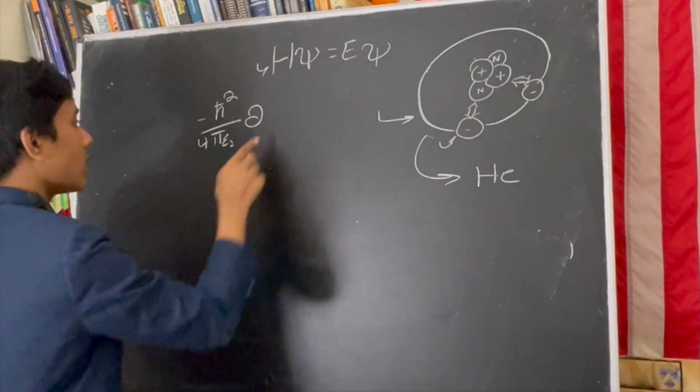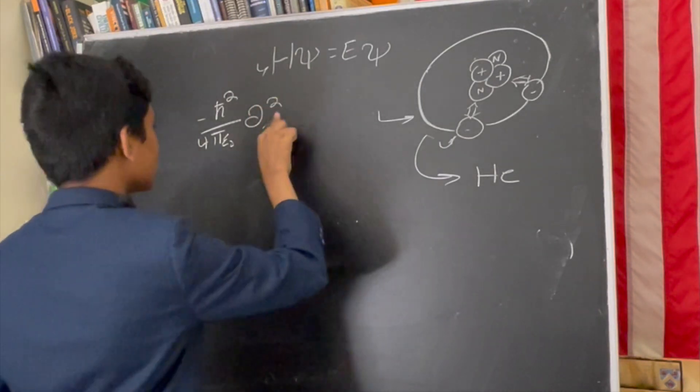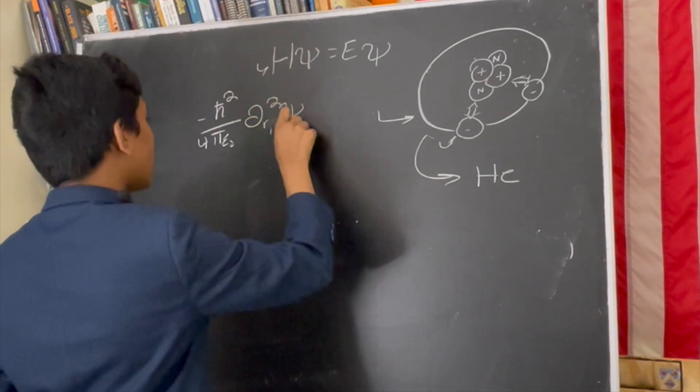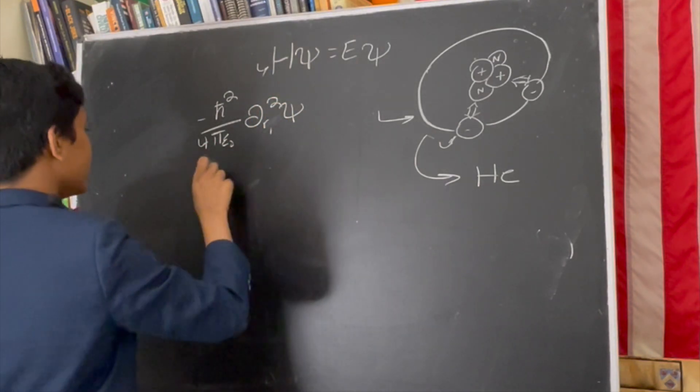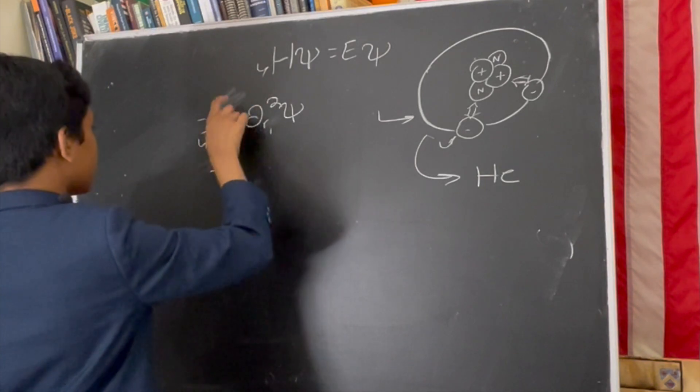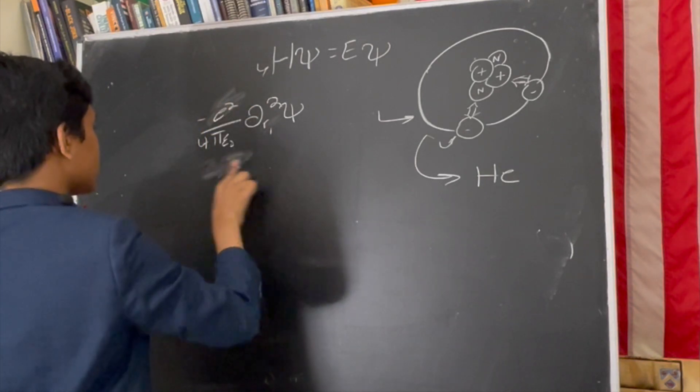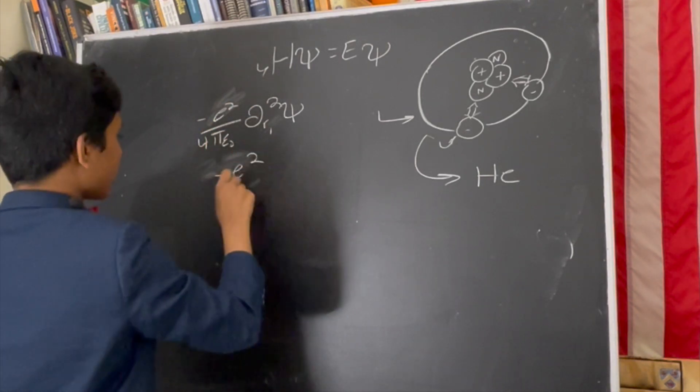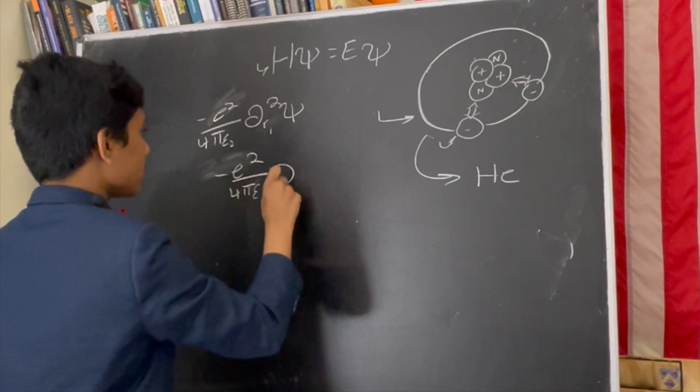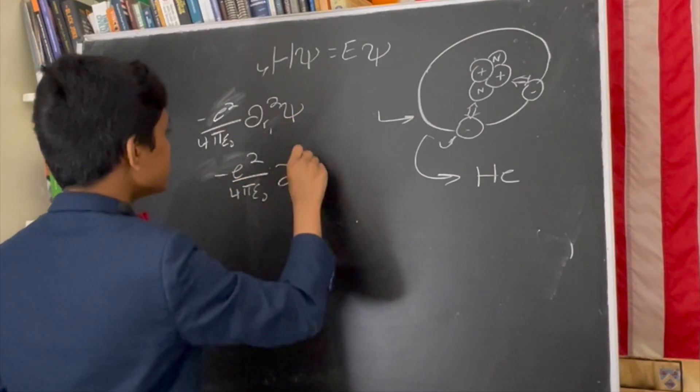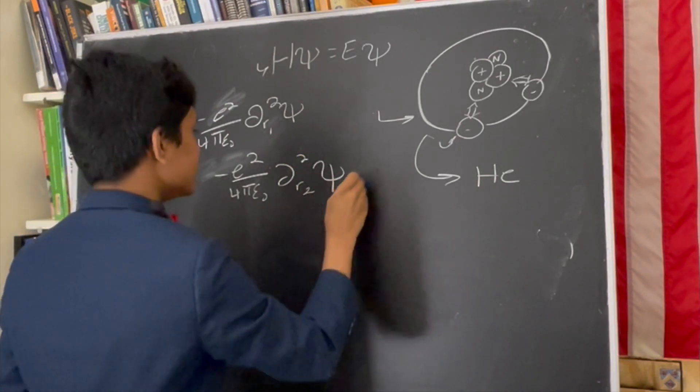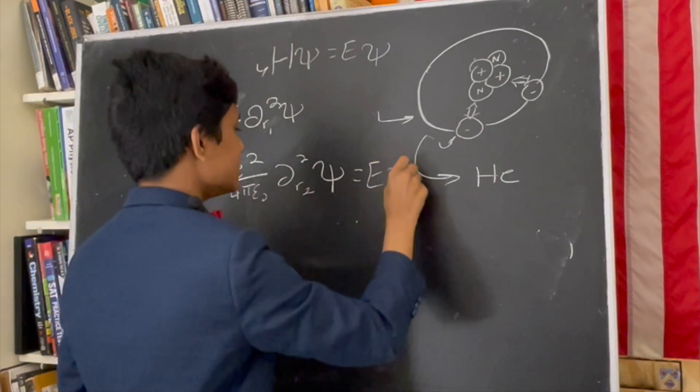Now I'm forgetting it. Let's say partial R1 squared is equal to E-phi.